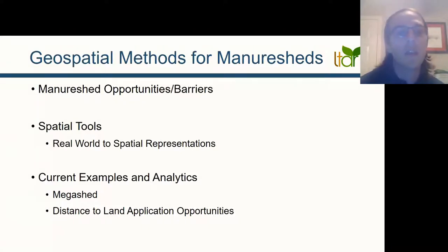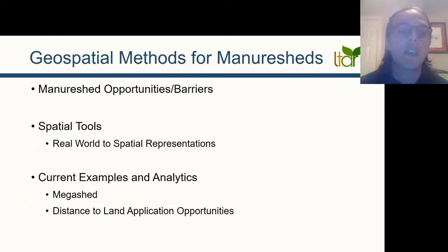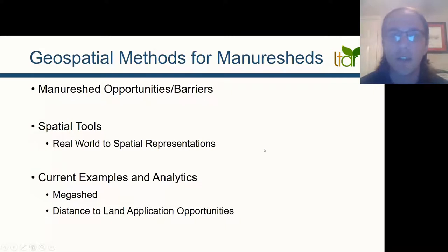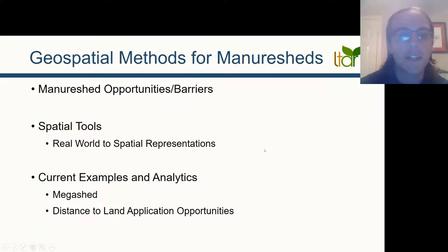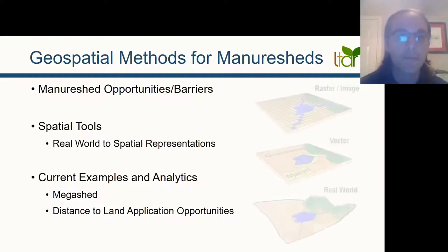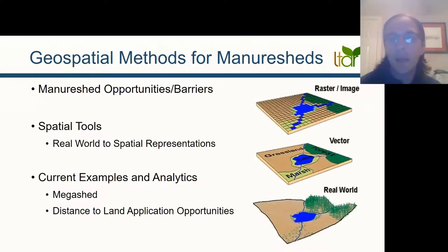The two examples are the mega shed and distance to land application opportunities in Washington. I saw some of you are from Washington, so hopefully you can even help us interpret some of the results.